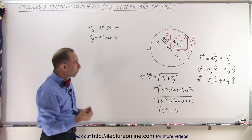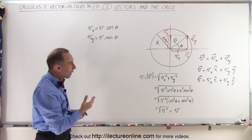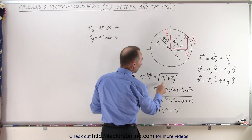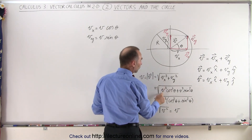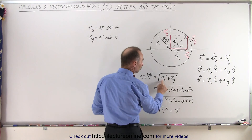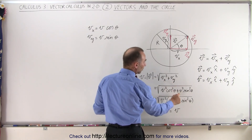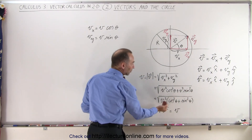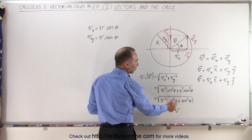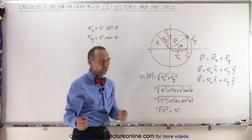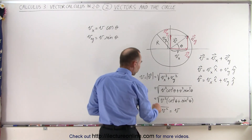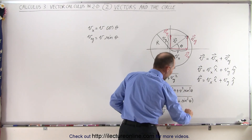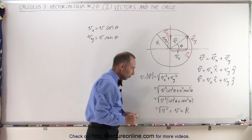To express the magnitudes of the x and y components in terms of the trigonometric functions: v sub x can be written as v times the cosine of theta, and we square that; v sub y can be represented as v times the sine of theta, and we square that. Then, if we factor out v squared, we have cosine squared plus sine squared, which equals 1. Therefore, we get the square root of v squared, which is equal to v, which is essentially equal to the radius of the circle.